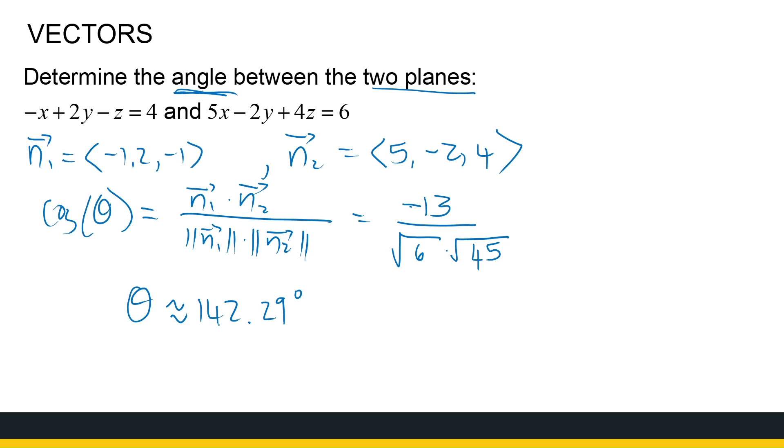So to find the angle between two planes, we look at the angles between the normal vectors to the planes, because the angles between the planes is the same as the angles between the normal vectors to the planes.